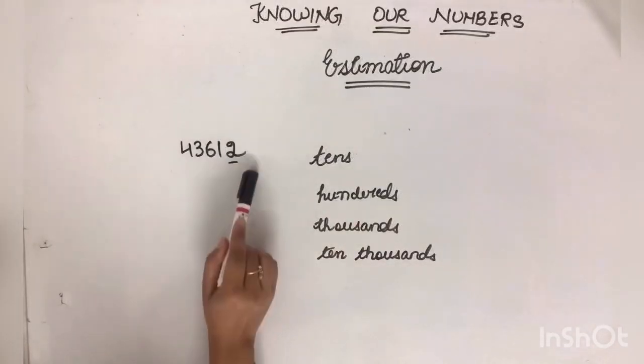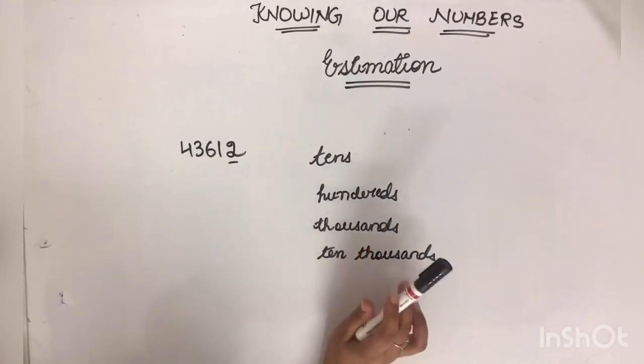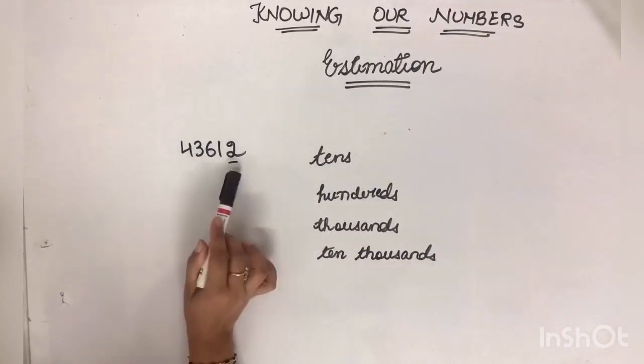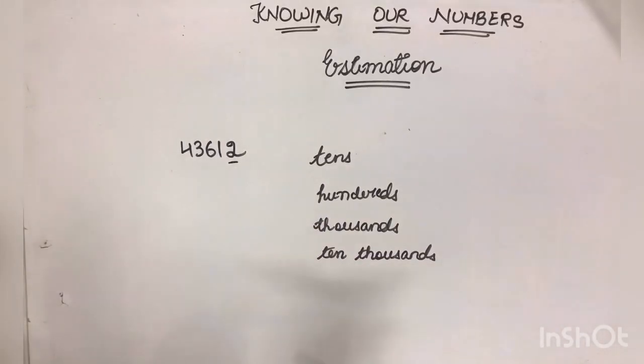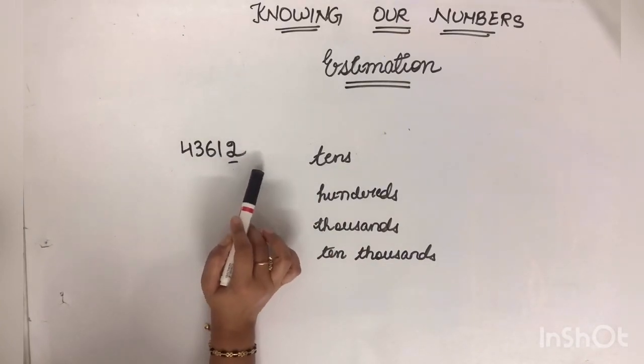Means हमें इस number में कितनी zeros बनानी है? 1. वैसे हंडर्ड में कितने 0 होते है? 2. तो मतलब हमें इस number में कितनी zeros बनानी है? 2. Same in the case of thousands and 10,000. So first one is tens. अब हमें याँ पीछे एक 0 बनाना है. It means 2 की जगा what we'll write? 0.